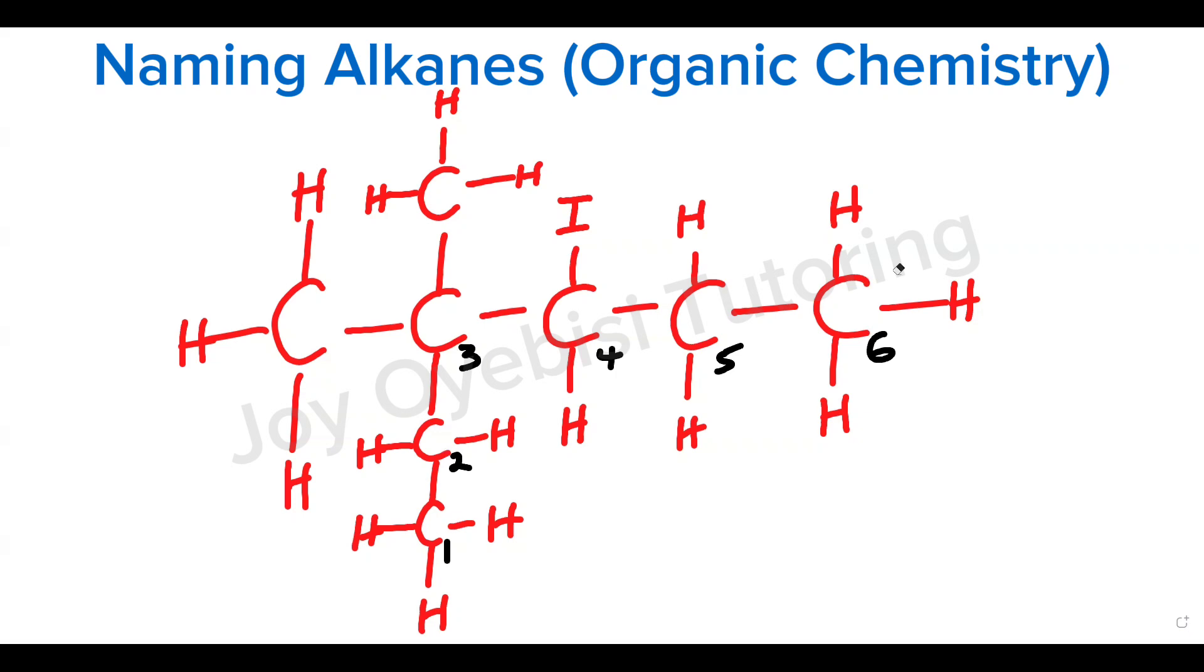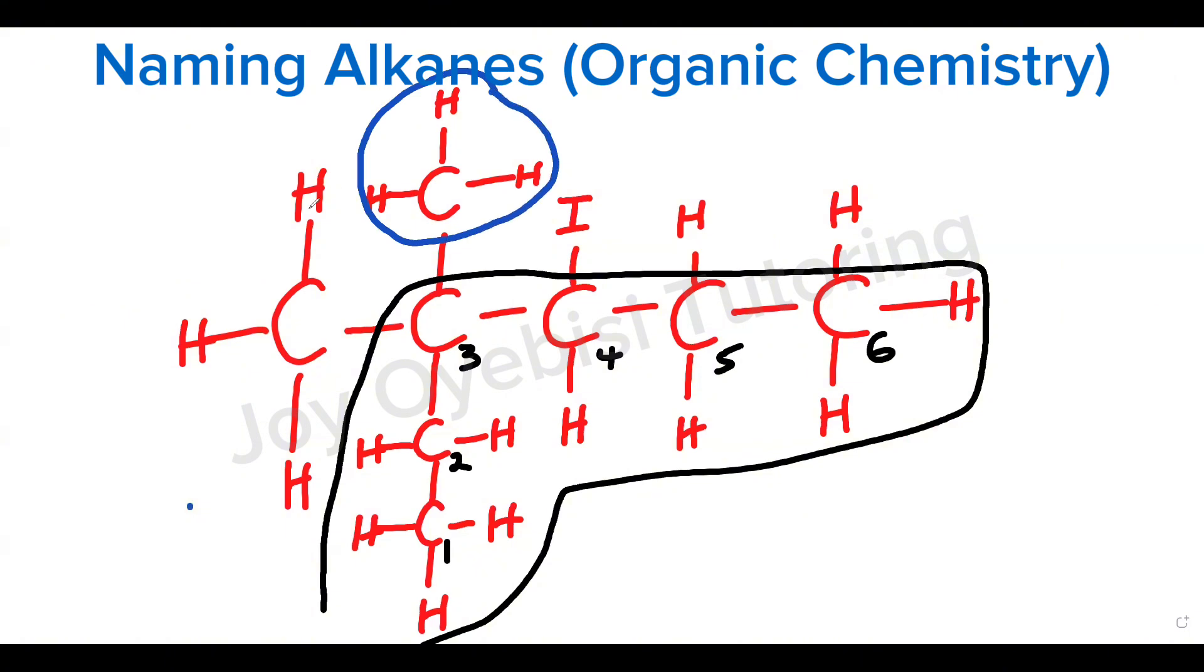Now we figured out the longest continuous carbon chain. The next thing would be to identify the branches or what we call the substituents. Any group attached to this longest chain, so this is our longest chain from here down. Any group attached to this longest chain is the branch, which means that this carbon, this is a branch. This also would be a branch or a substituent.